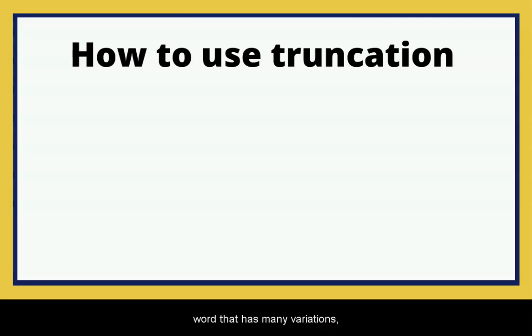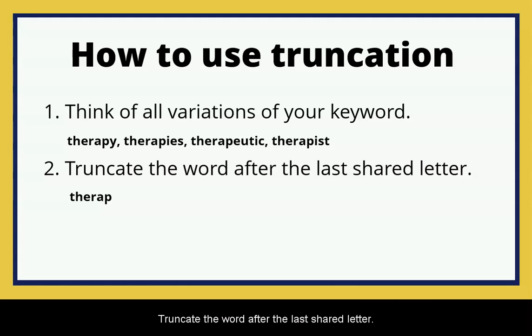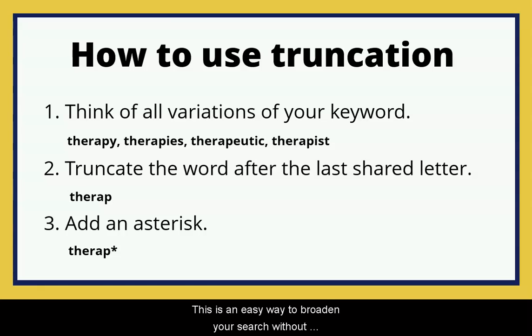So if you are searching for a word that has many variations, think of all the variations of your keyword, truncate the word after the last shared letter, and add an asterisk at the end. This is an easy way to broaden your search without having to include all variations of your keywords in your search.